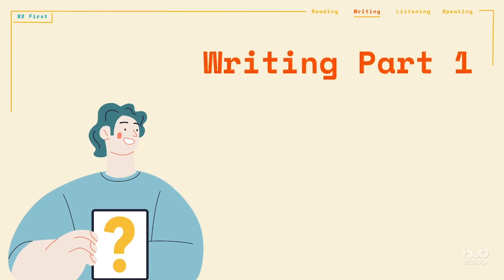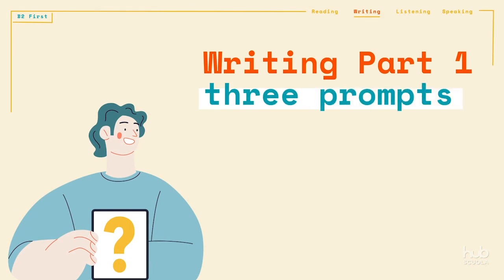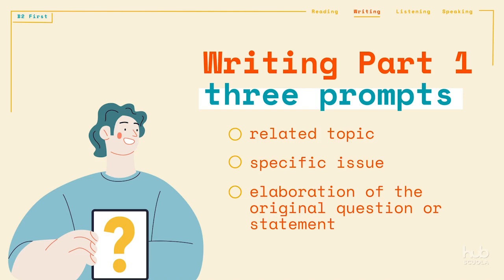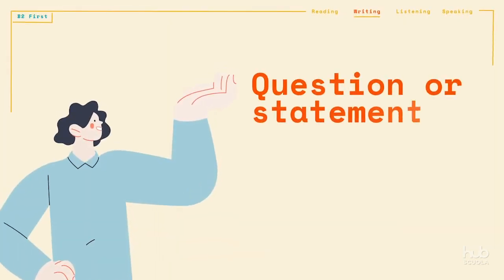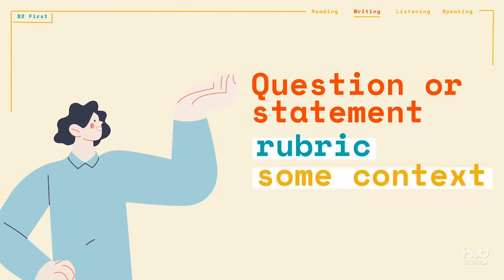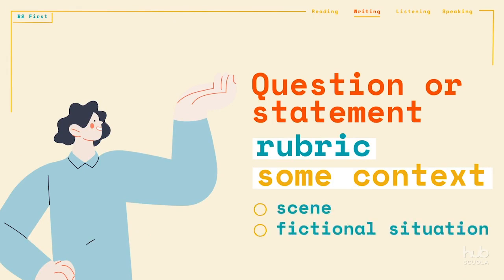Writing Part 1 provides a question or statement followed by three prompts. Two of these prompts provide a related topic, a specific issue or an elaboration of the original question or statement. The third prompt will be invented by you, based on your own idea linked to the question or statement. The question or statement will be introduced with a rubric, providing some context in regard to the purpose of the essay. The rubric sets the scene, providing a fictional situation that explains why you're writing the essay.